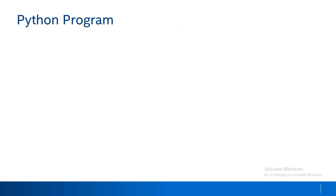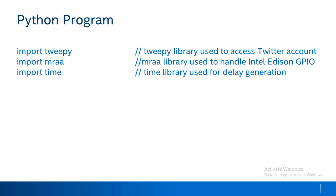Now let's understand the Python program for this case study. In this program we must import three libraries: Tweepy to access the Twitter account, the MRAA library to control Intel Edition GPIO, and the time library to provide blink delay in the notification light.